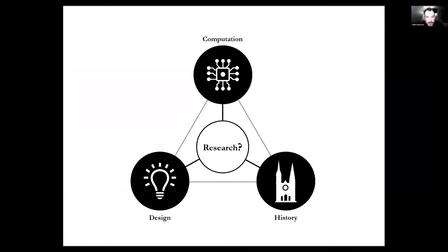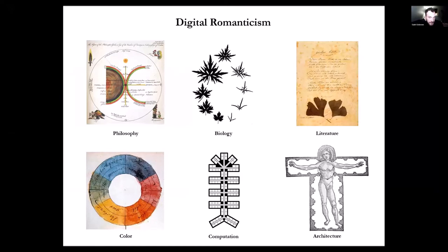My PhD dissertation is what I call digital romanticism — a rereading of Goethe's writings developed in the 18th century on morphology. Goethe was a prominent figure during Romanticism, primarily a poet and literary genius, but he wrote extensively on natural sciences, plants and animals, philosophy, and a full treatise on colour. In my research I looked at his body of work and developed algorithmic explorations on some of his ideas.